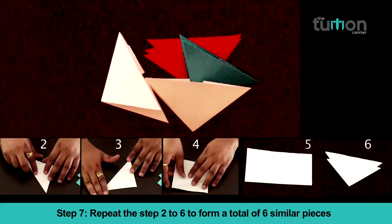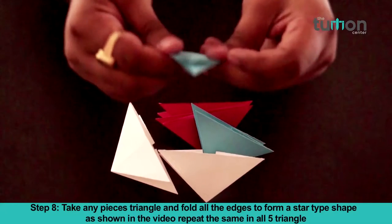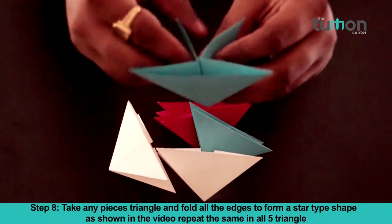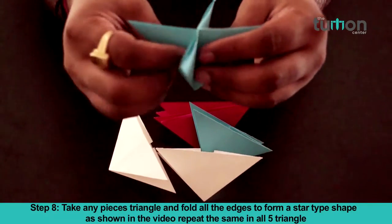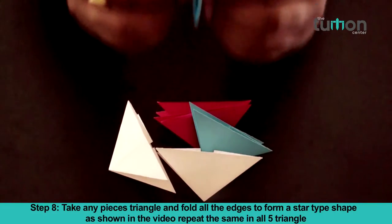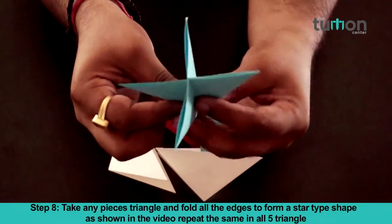Repeat steps two to six to form a total of six similar pieces. Take any triangle piece and fold all the edges to form a star-type shape as shown in the video. Repeat the same in all five triangles.